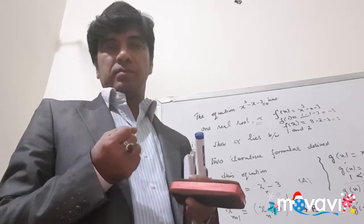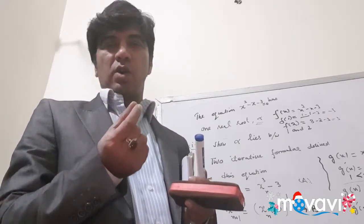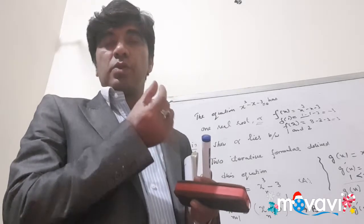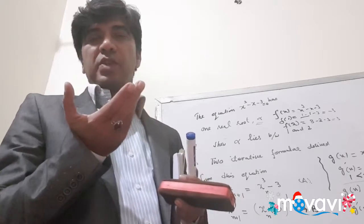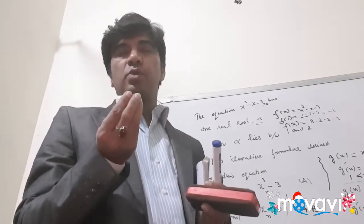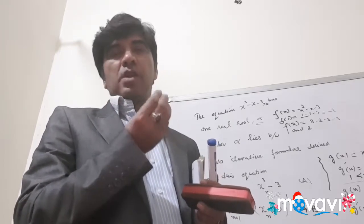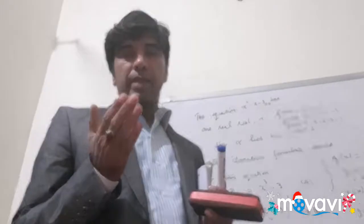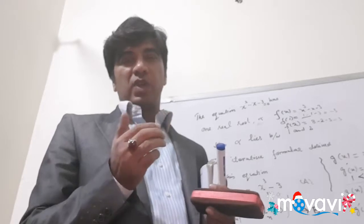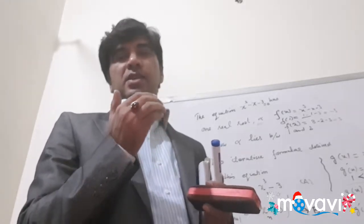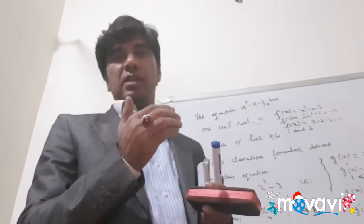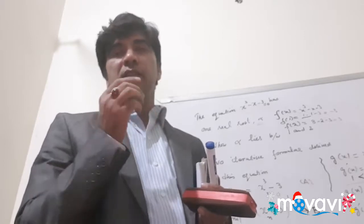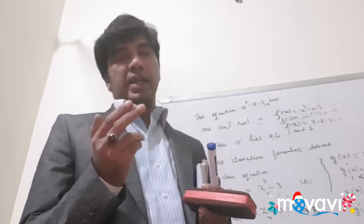The equation was given and two values of x were also given, and it was asked to verify: does the root lie between these two values? As I told you, what you do is suppose the equation is equal to function f(x). You convert the equation into function form: f(x) = x³ − x − 3. Then, turn by turn, you take one value of x and the other value of x. If both values give answers with different signs — one positive and one negative — that verifies the root lies between those two values.